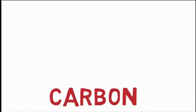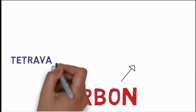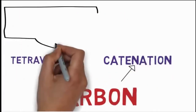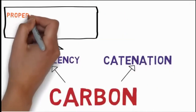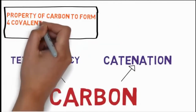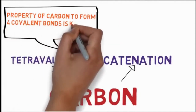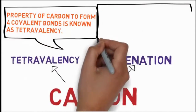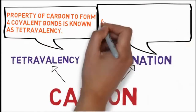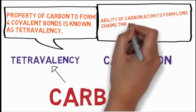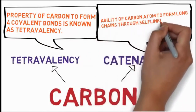Carbon has 2 properties which make its study interesting: Tetravalency and Catenation. Carbon forms 4 bonds, and this property of carbon to form 4 covalent bonds is known as tetravalency. The ability of carbon atoms to form long chains through self-linking is known as catenation.